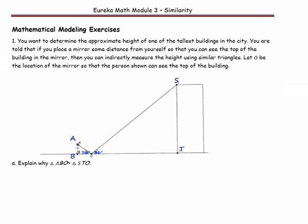Number 1. You want to determine the approximate height of one of the tallest buildings in the city. If you place a mirror some distance from yourself so that you can see the top of the building in the mirror, you can indirectly measure the height using similar triangles. Let O be the location of the mirror so that the person shown can see the top of the building.